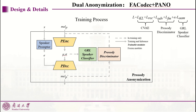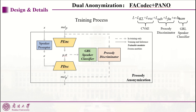We use five losses in the training process. KL loss and reconstruction loss come from CVAE. Adversarial loss and feature matching loss from the prosody discriminator are used to optimize the prosody decoder. AAM loss from the GRL speaker classifier is used to optimize the prosody encoder. Alpha here is to control the AAM loss to be in the same scale as other losses.